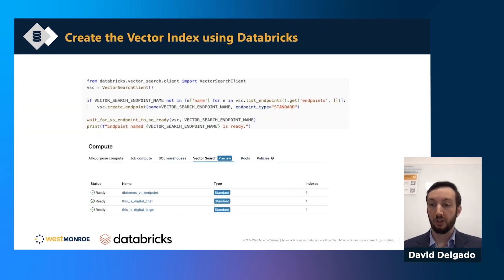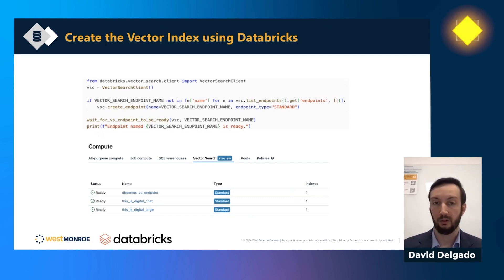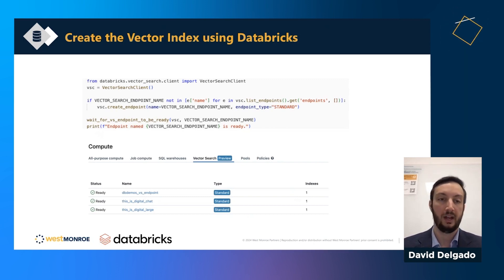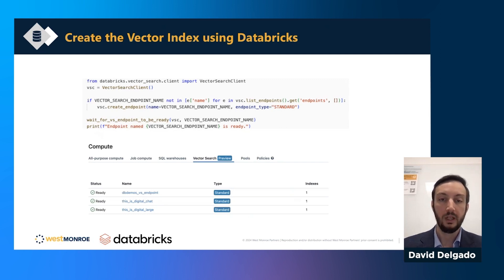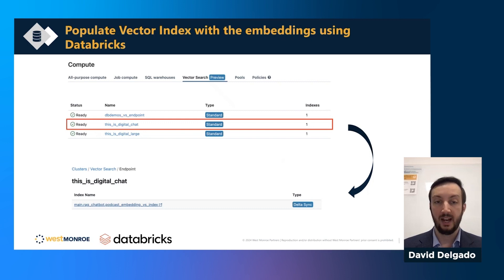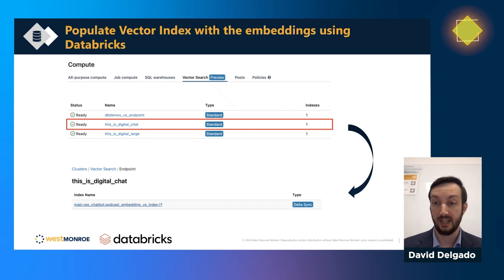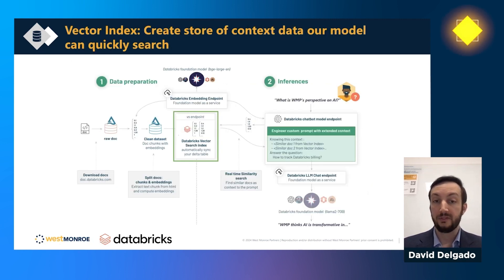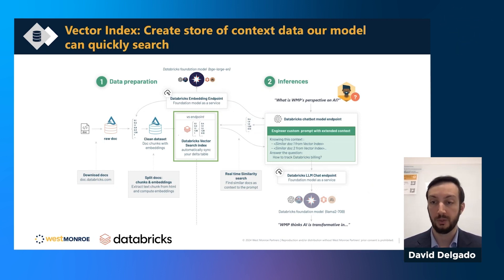Once we have all those chunks ready, we need to set up the vector search index database — essentially creating the house we're going to fill. This is done with a couple lines of code from the Databricks documentation. Once that database is set up, I load all my information into it, creating the actual index that the model will search. After that, we've created a Databricks vector search index that can easily be searched once we pose a question.